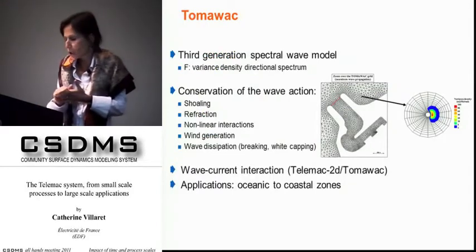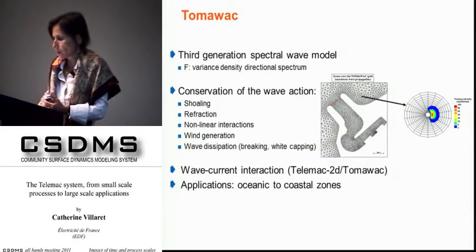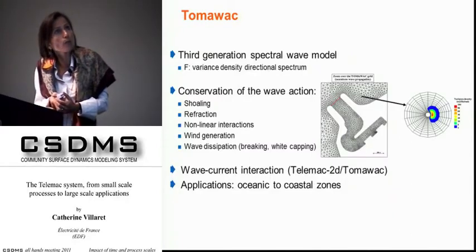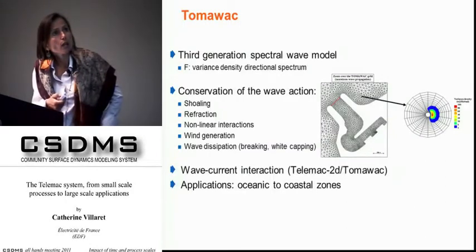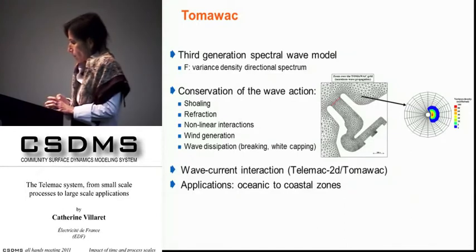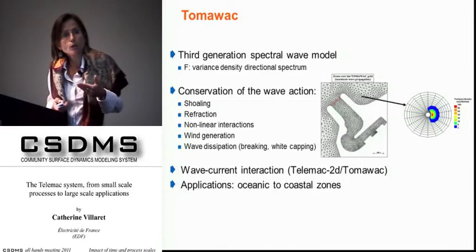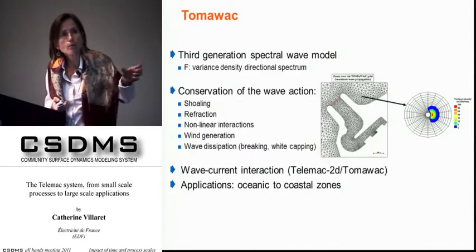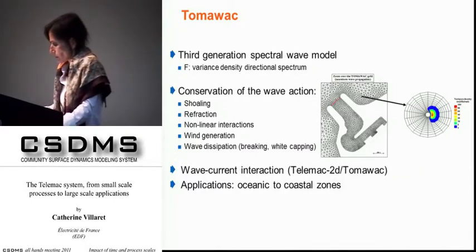A word on the wave generation model called TOMAWAC. It's a third-generation spectral wave model; the main variable is the variance density directional spectrum, solving conservation of wave action. It includes shoaling, refraction, and nonlinear interactions. Source terms include wind generation; sinks are wave dissipation due to breaking, white-capping, and bottom friction. We now have wave-current interaction for littoral applications, taking into account radiation stresses calculated by TOMAWAC and passed into the TELEMAC model.